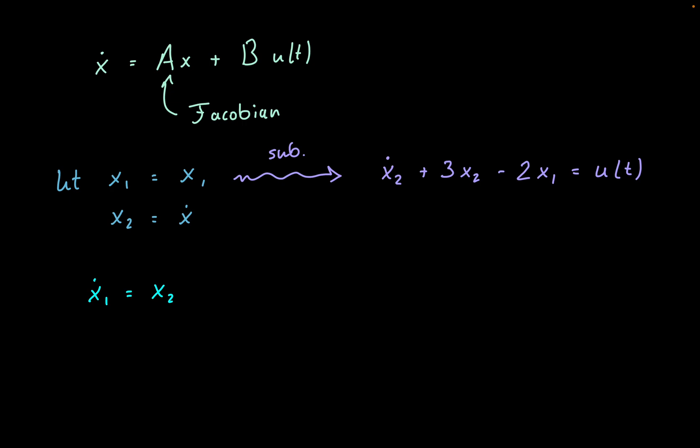Then for the next part, what we can do is we have to write out our x2 dot equation. So we have that already up here. So we pretty much just need to move all our variables off to one side and just isolate x2. So in this case, what we're left with is 2x1 minus 3 times x2 plus u of t. And now we are actually ready to put this into our state-space form.